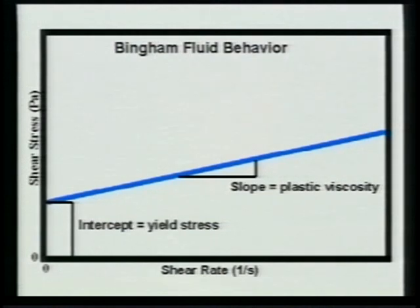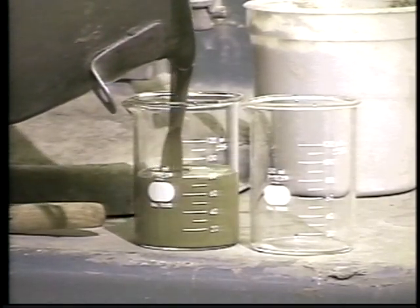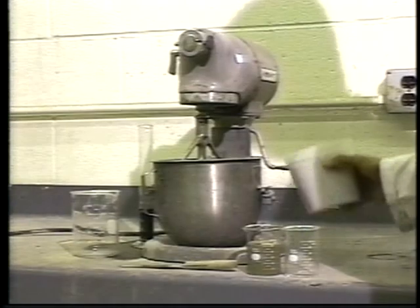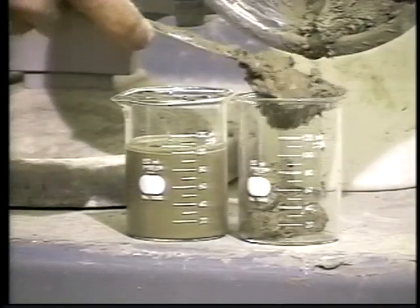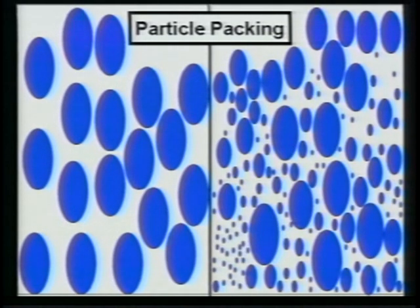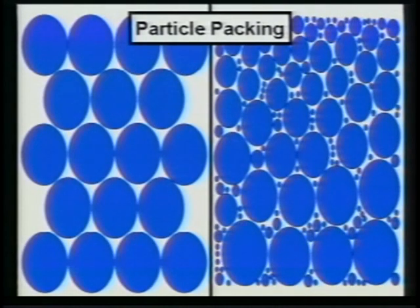Many suspensions exhibit this behavior, including both cement paste and concrete. A Bingham fluid must be characterized by two parameters: yield stress and plastic viscosity. A key parameter controlling the viscosity of a suspension is the concentration of particles. The viscosity increases as more particles are added until eventually the suspension is no longer a liquid. The packing of particles is also important. If the particles can be packed more densely, the concentration can be increased without changing the viscosity. One way to achieve dense packing is to use a broad particle size distribution.